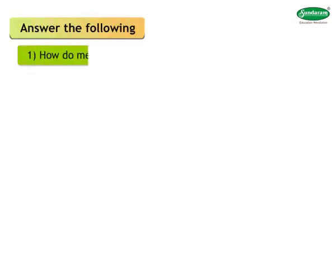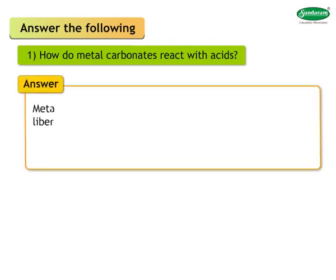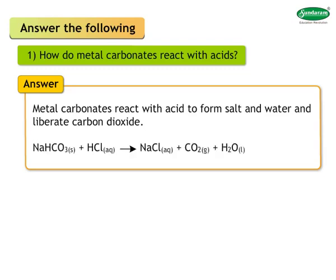How do metal carbonates react with acids? Answer: Metal carbonates react with acid to form salt and water, and liberate carbon dioxide. For example: NaHCO₃ (solid) + HCl (aqueous) → NaCl (aqueous) + CO₂ (gas) + H₂O (liquid).